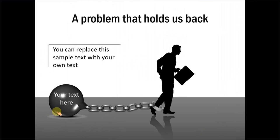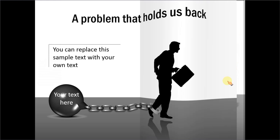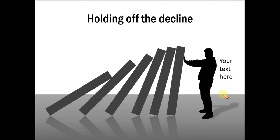Here we have used the everyday object of an iron ball tied to a chain, showing how it is preventing a person from moving forward — representing the idea of a problem that holds us back. And this last example from our PowerPoint CEO packs talks about the domino effect and how a person is helping to hold off a decline that has been triggered by someone else. These are simple objects which, once combined with people or other elements and given meaning, create beautiful business slides.